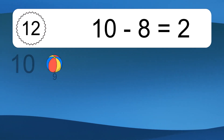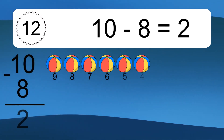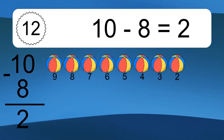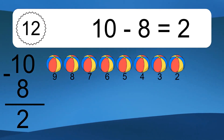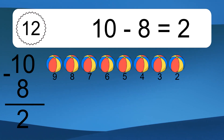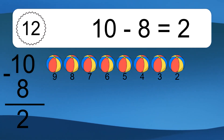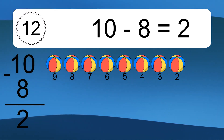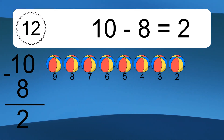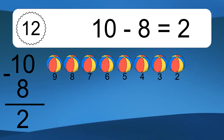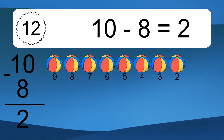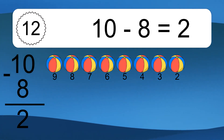10 minus 8 equals what? 10 minus 8 equals 2. Let's count it: 9, 8, 7, 6, 5, 4, 3, 2.